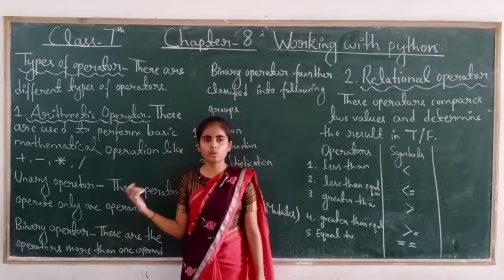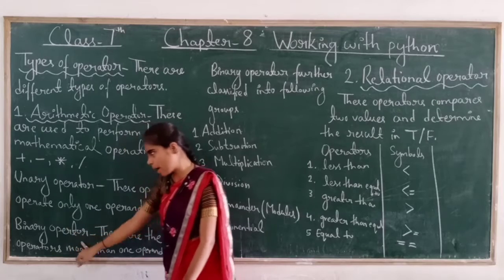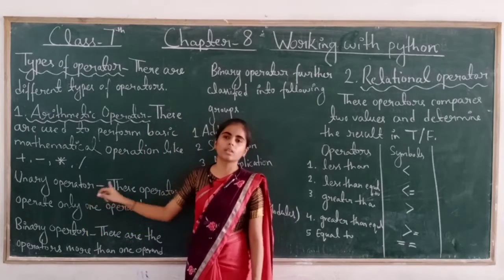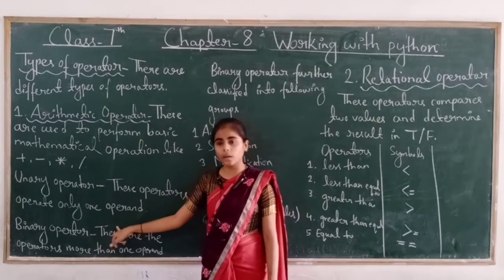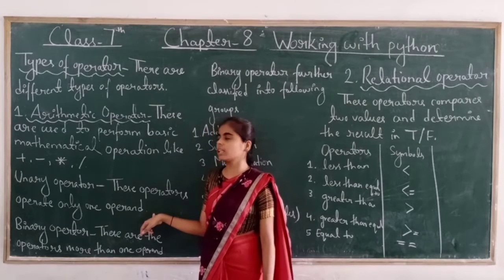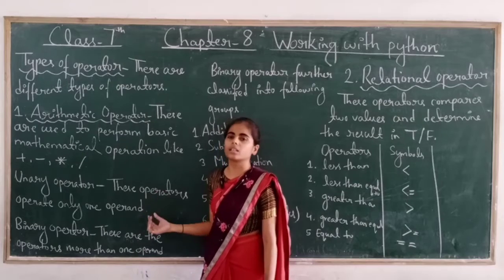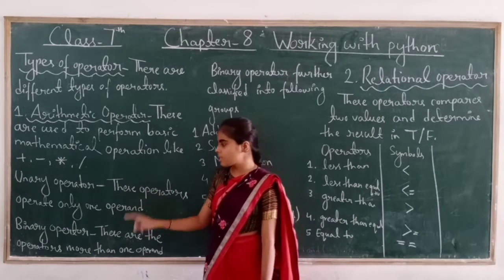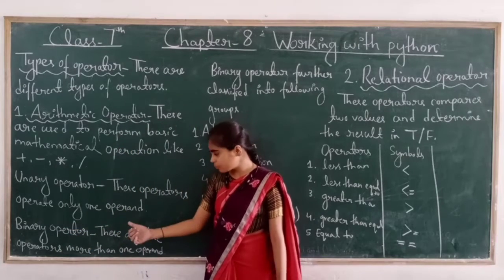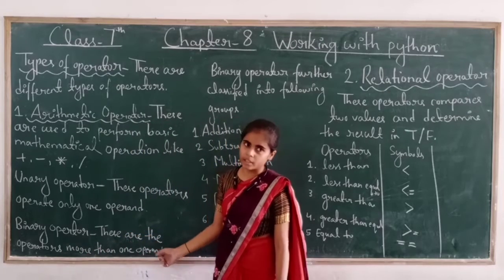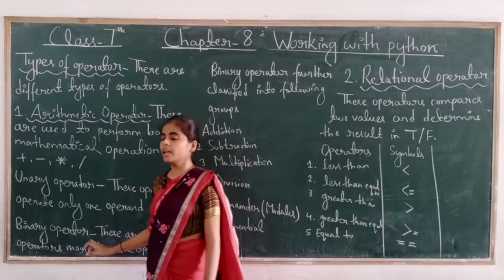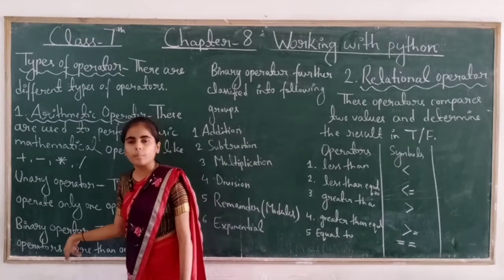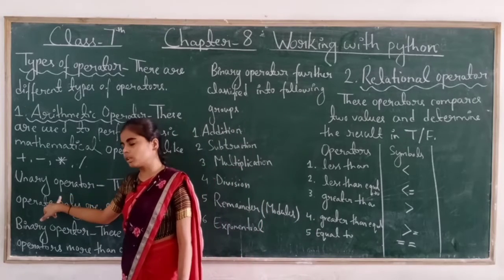Arithmetic operators are further divided into two groups: Unary Operator and Binary Operator. Unary operators operate on only one operand — for example, minus 100, minus 25, plus 25, or plus 30, with only a single operand used. Binary operators use more than one operand — for example, 5 plus 3, 4 plus 7, 9 plus 6. When one operand is used we call it Unary Operator, and when more than one operand is used we call it Binary Operator.